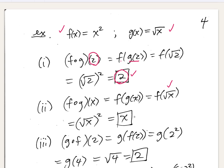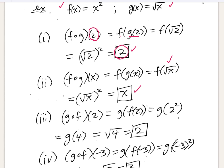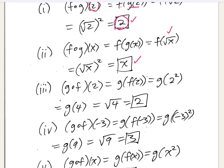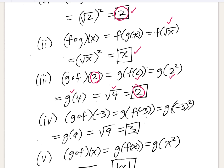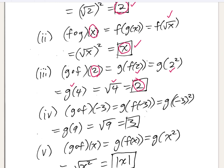Let's use a more general x: f of g of x. That's f of the square root of x. f takes whatever you drop into it and squares it. I put the square root of x in there, so it squares the square root of x. The square root of x squared is just plain old x. Now let's try g of f of 2. f of 2 is 2 squared which is 4, so that's g of 4 — the square root of 4 is 2. Again, we started with 2 and ended with 2.